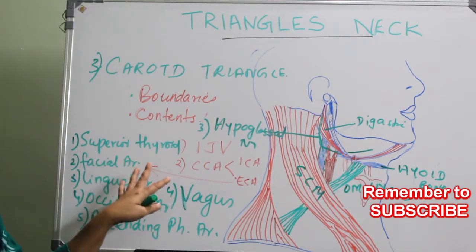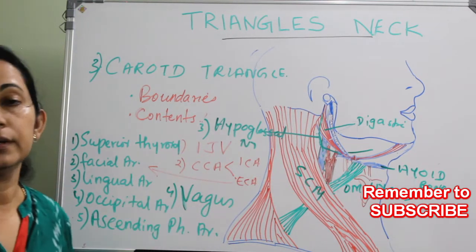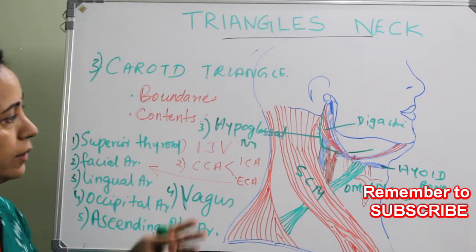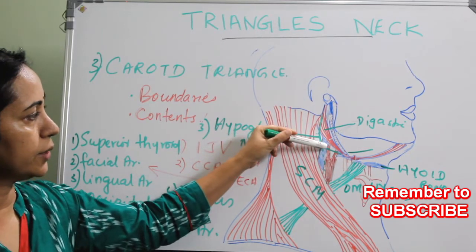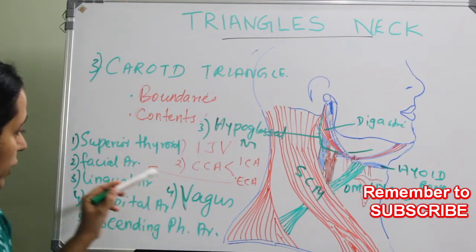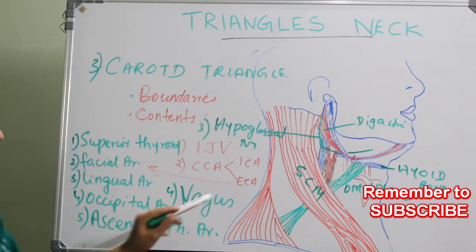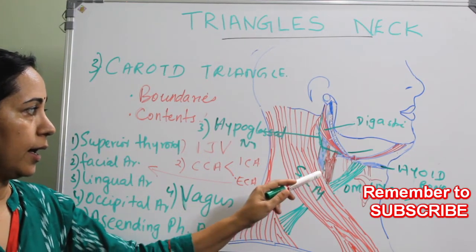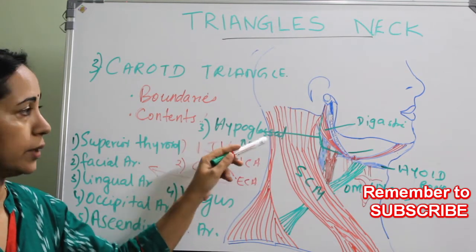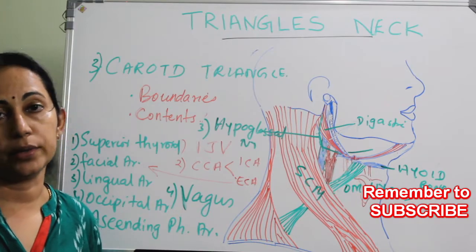These are the contents. To recapitulate: the internal jugular vein with five veins draining into it, the common carotid artery dividing into internal and external carotid with five branches of the external carotid given off in the carotid triangle, and also the vagus nerve and hypoglossal nerve seen in the carotid triangle.